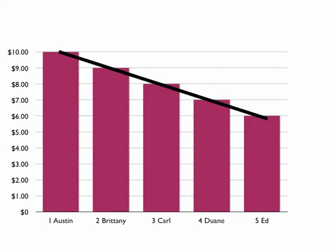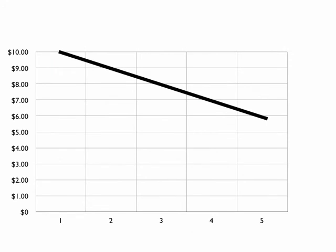We can simply take the individual demand curve and convert it from a column chart to a line, eliminating the stair-step and simplifying the data in this way.